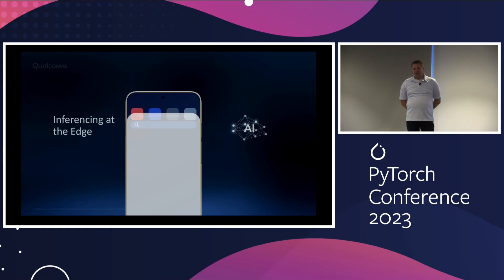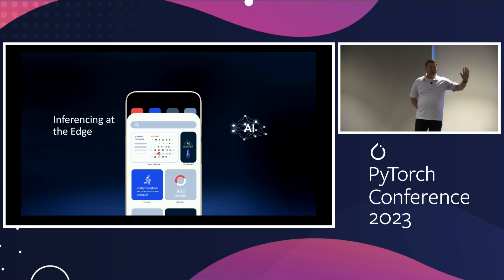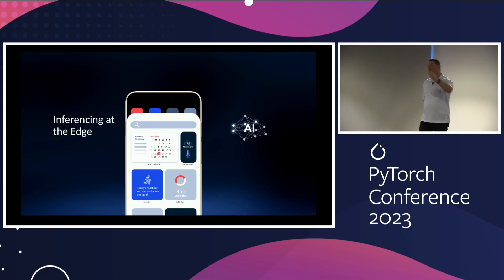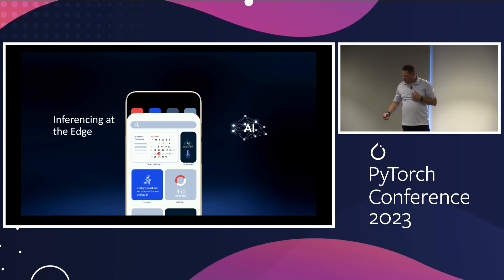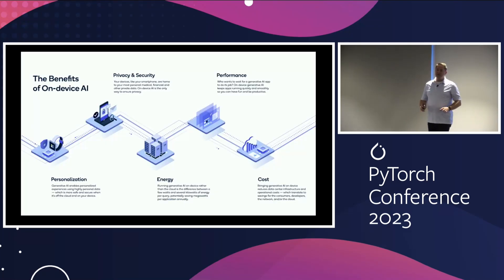The theme of the presentation today is inferencing at the edge. Any guesses why it's important? There are a few reasons that are more important not to you personally or to me personally, but probably to the people that are actually going to use your application. First of all: privacy and security.